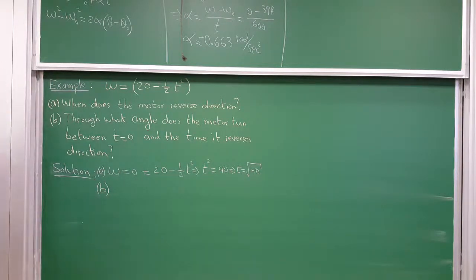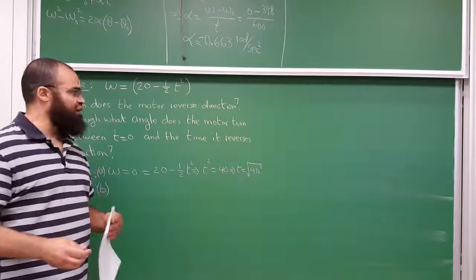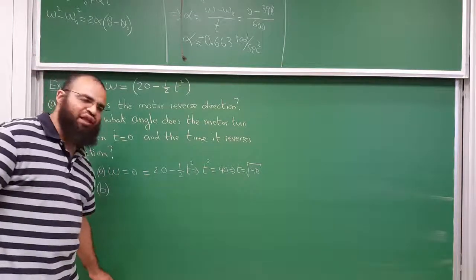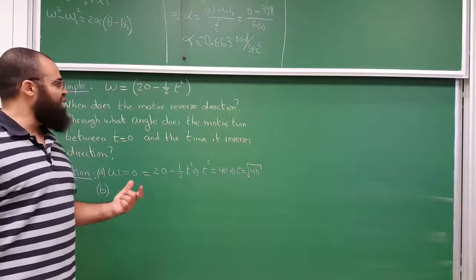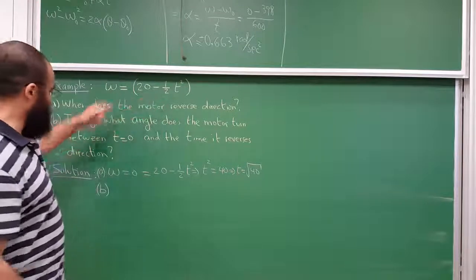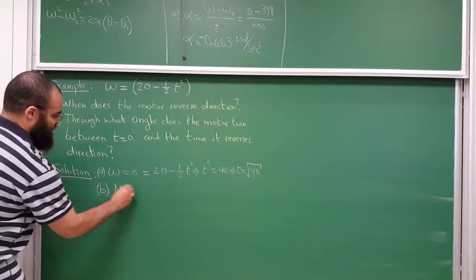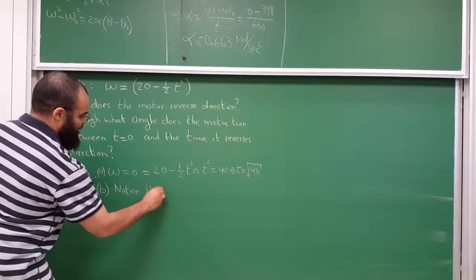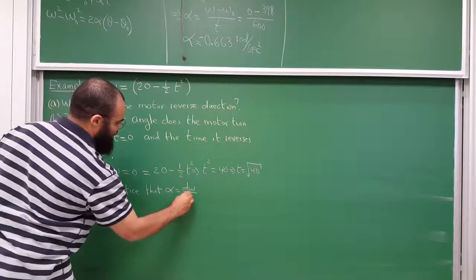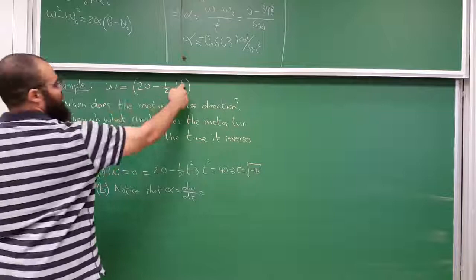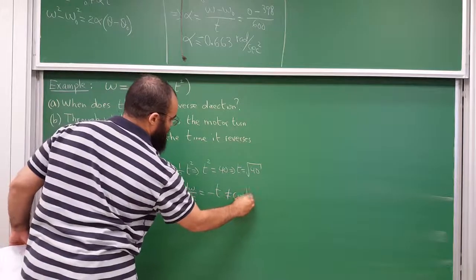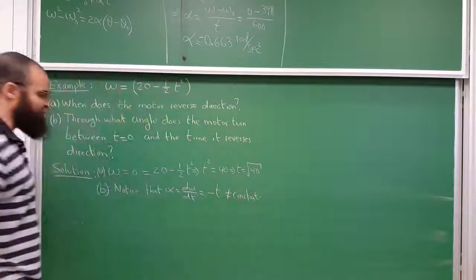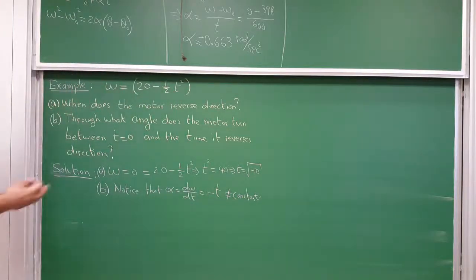Part B: through what angle does the motor turn between t = 0 and the instant it reverses? You might be tempted to use kinematics, but you can't — those equations assume constant alpha. Here, alpha = dω/dt = −t, which is not constant; it changes with time. So you cannot use the constant-acceleration kinematic equations. You have to integrate.